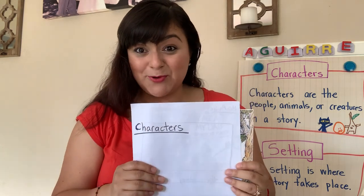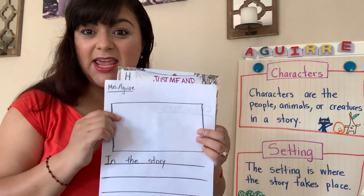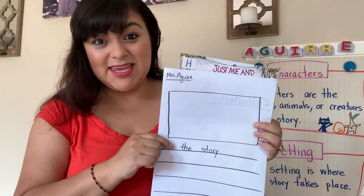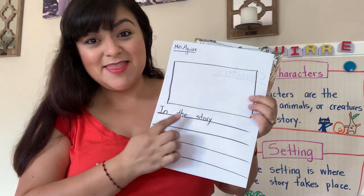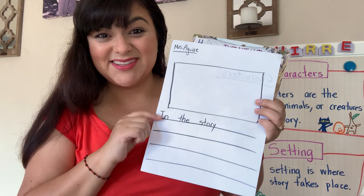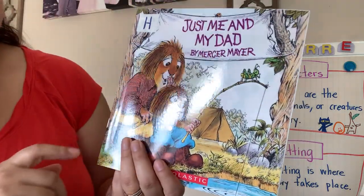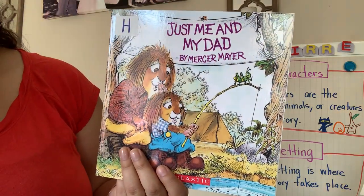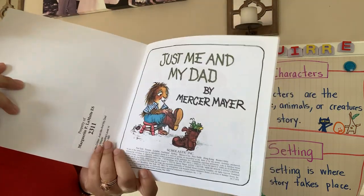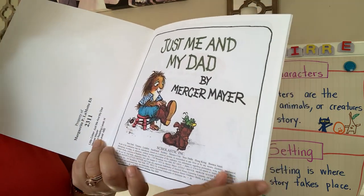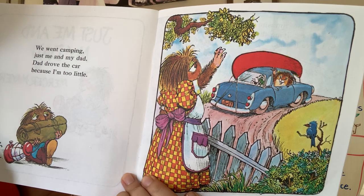Then, so that we're not wasteful, turn it around when we're done with the characters and write your name and draw some key details from the story. I started mine and wrote in the story. Okay, let's get started. Just Me and My Dad by Mercer Mayer.